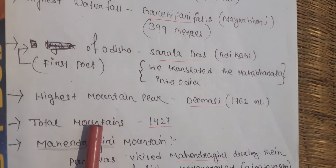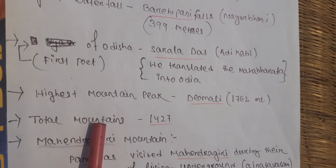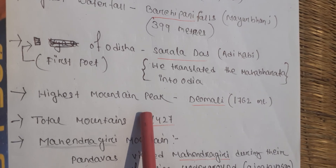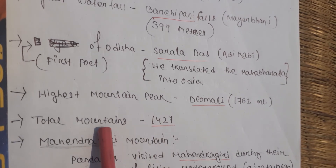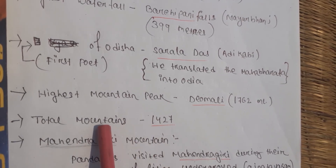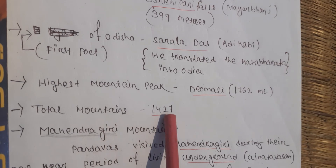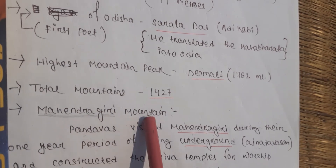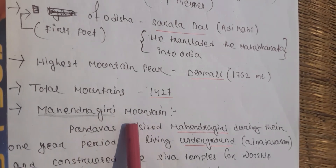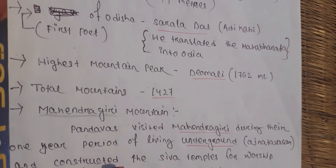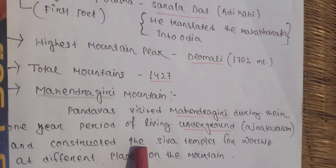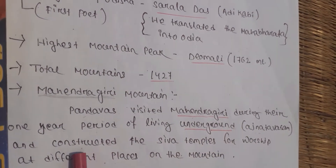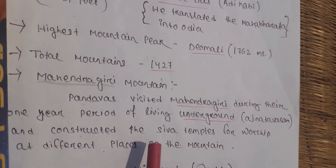The highest mountain peak of Odisha is Deomali. The total number of mountains in Odisha is 1,427. The Mahendragiri mountain is historically significant — the Pandavas visited Mahendragiri during their one-year period of living in hiding, known as Agnyatvas.